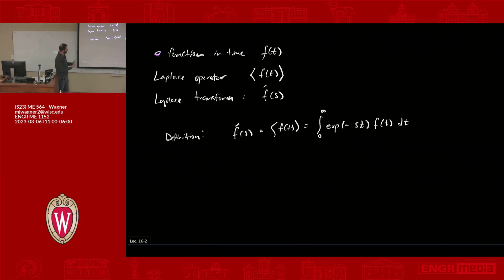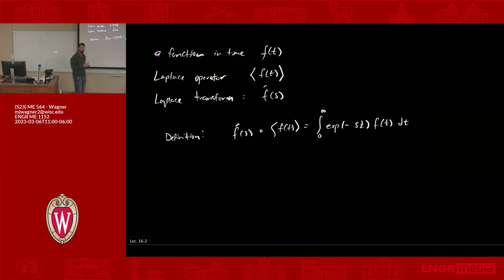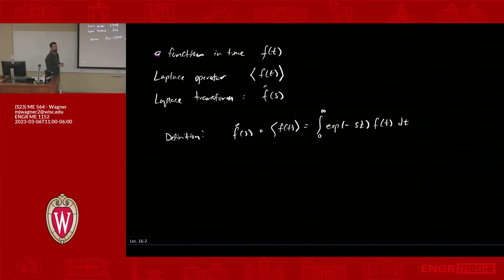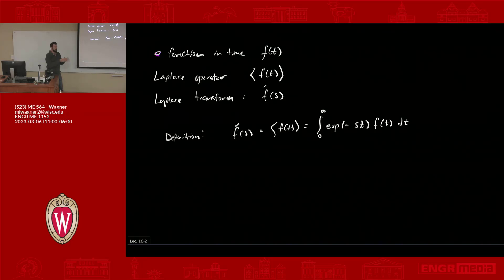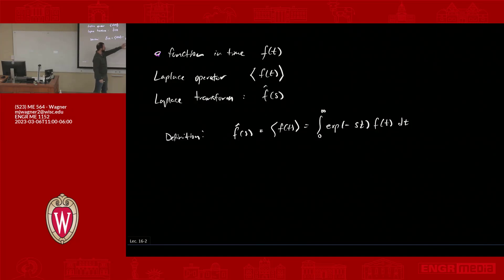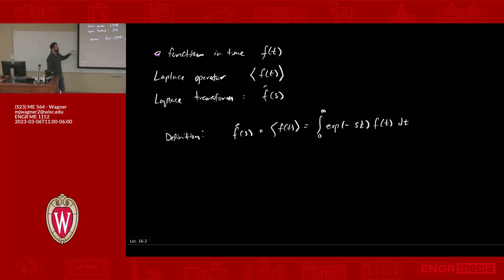Think about any case where you take the integral of a function — you integrate x and get x²/2 plus a constant. All the information about the original function is still there; you just add a constant of integration. It's the same thing here: you do this definite integral and all the information about the original function is still there, just in a different form. Our job is to solve the problem and then do the inverse.